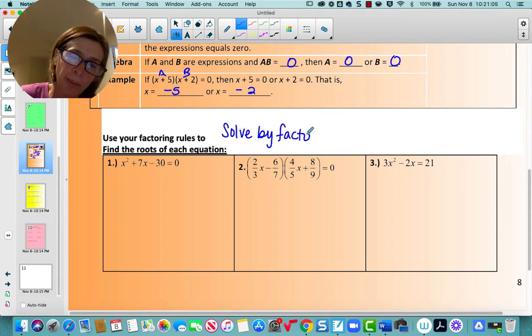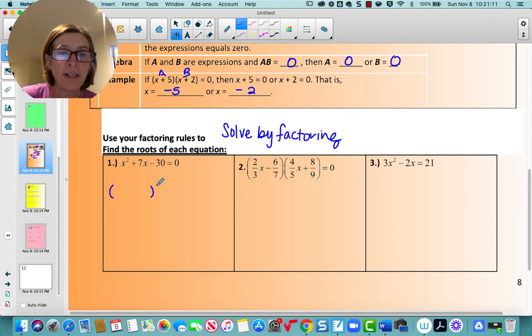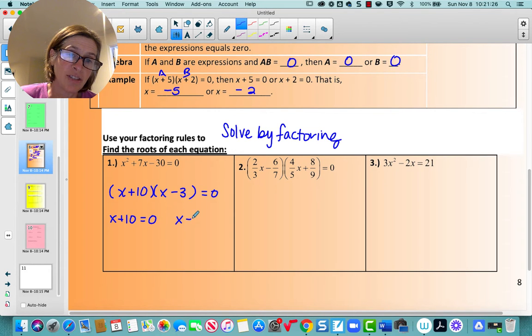So I'm going to solve by factoring. Now it's not always possible to factor. There are other ways to do it. But this looks factorable. So I'm going to factor with the factors that multiply to 30 and add to seven, which would be x plus 10 and x minus three equals zero. And then using the zero product property, set each factor equal to zero to get the roots of the equation.